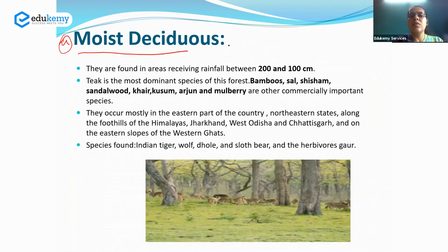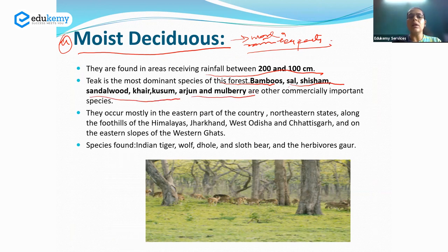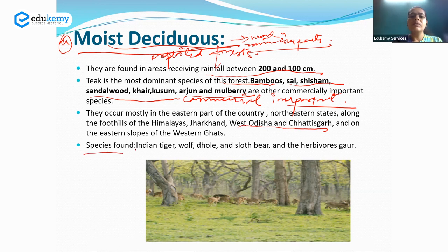The first subcategory, moist deciduous forests, is found in relatively rainier parts, in areas receiving rainfall between 100 to 200 cm. Some important dominant species found here include bamboo, sal, sheesham, sandalwood, khar, kusum, arjun, and mulberry. These are commercially important species, and hence moist deciduous forests are one of the most exploited commercial forests of India. They are distributed across central India, eastern India, and even the lower ranges of the Himalayas. Wildlife species found here include the Indian tiger, wolf, and sloth bear.